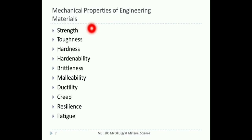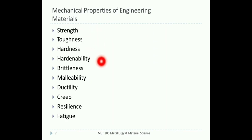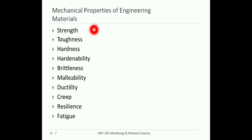The basic mechanical properties of engineering materials are: strength, toughness, hardness, hardenability, brittleness, malleability, ductility, creep, resilience, and fatigue. These are the basic mechanical properties of engineering materials.